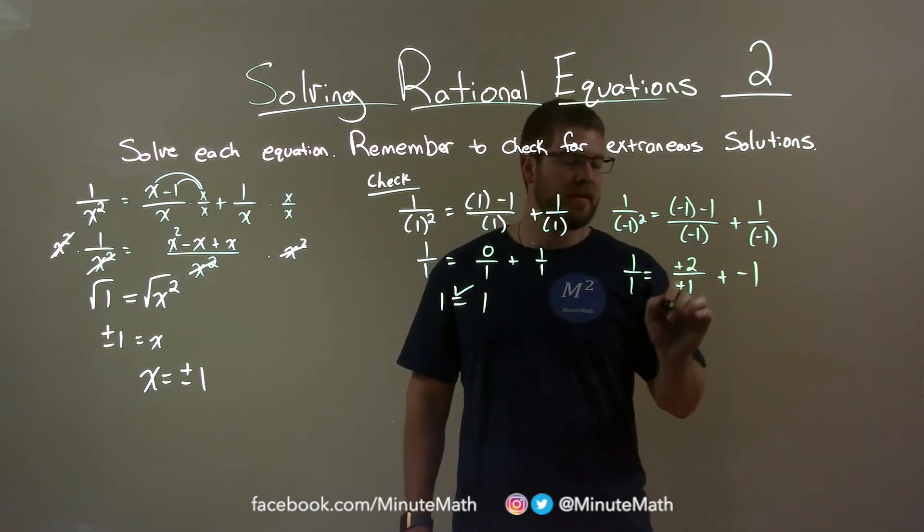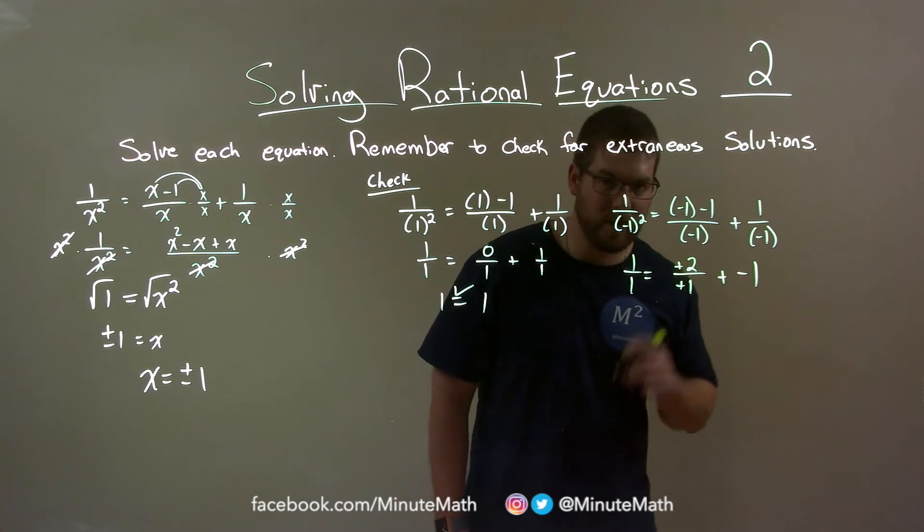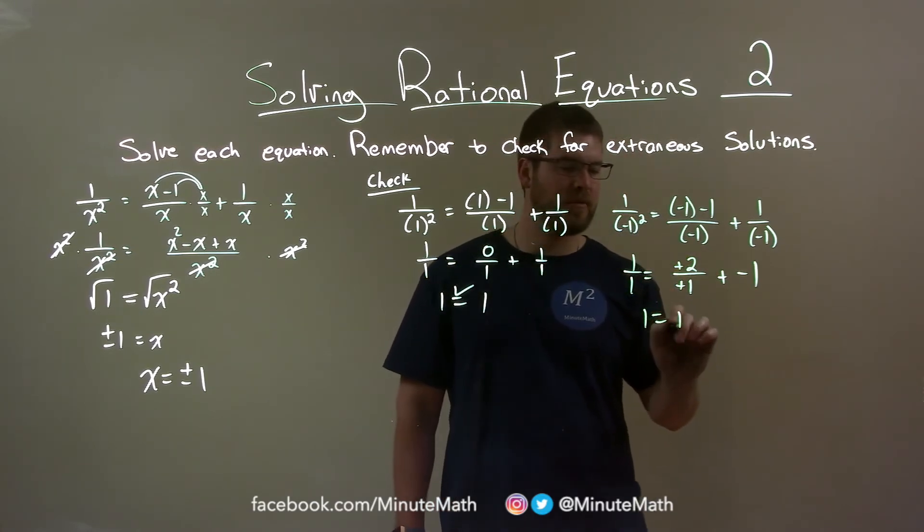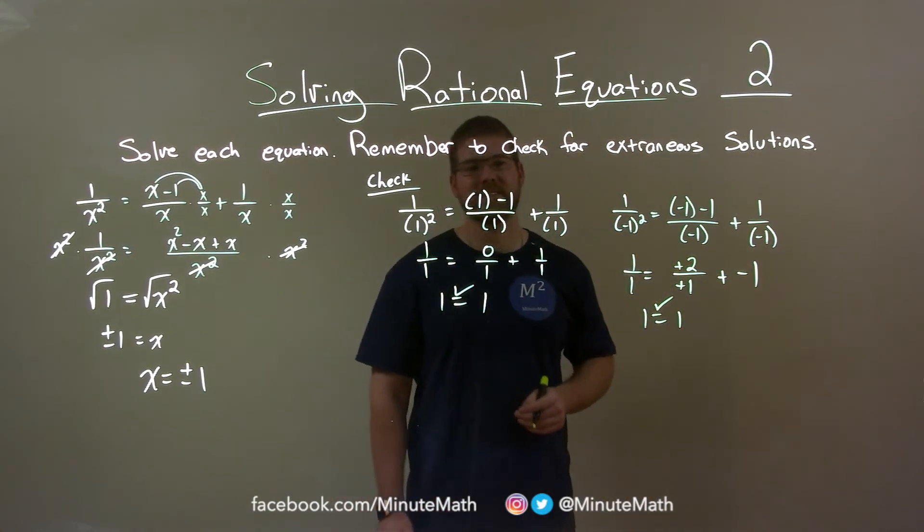The negatives cancel out here, so now I have 2 plus negative 1 is positive 1. So 1 equals 1. Left and right hand side are equal.